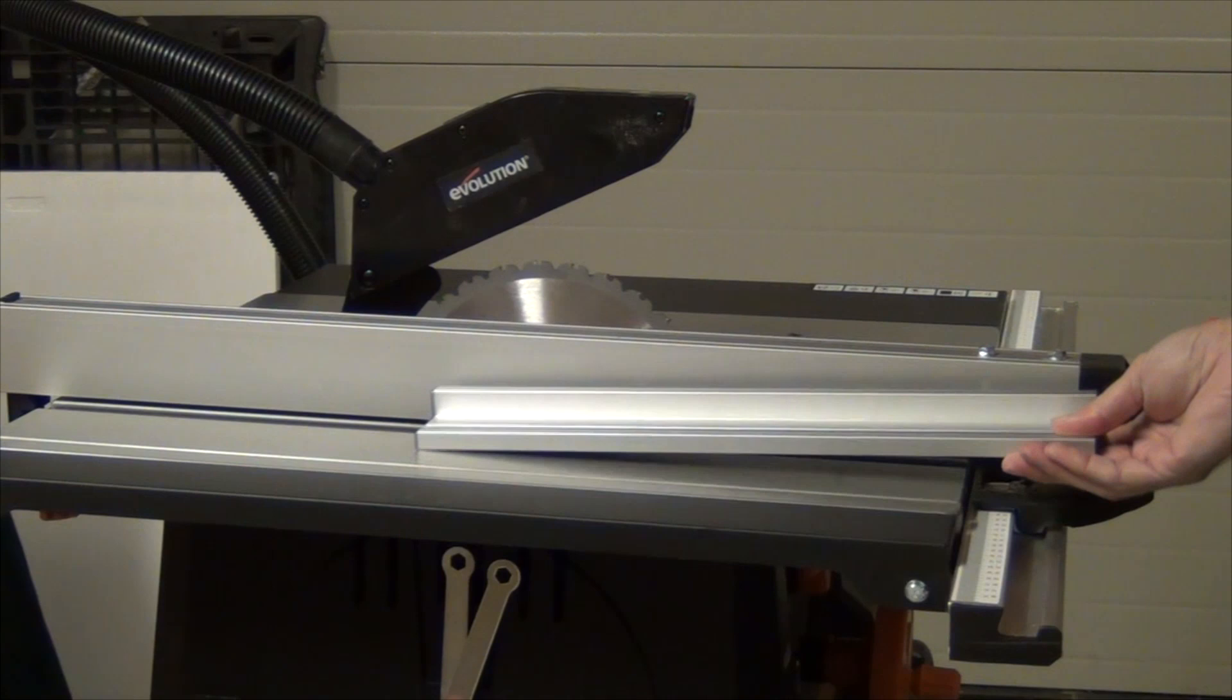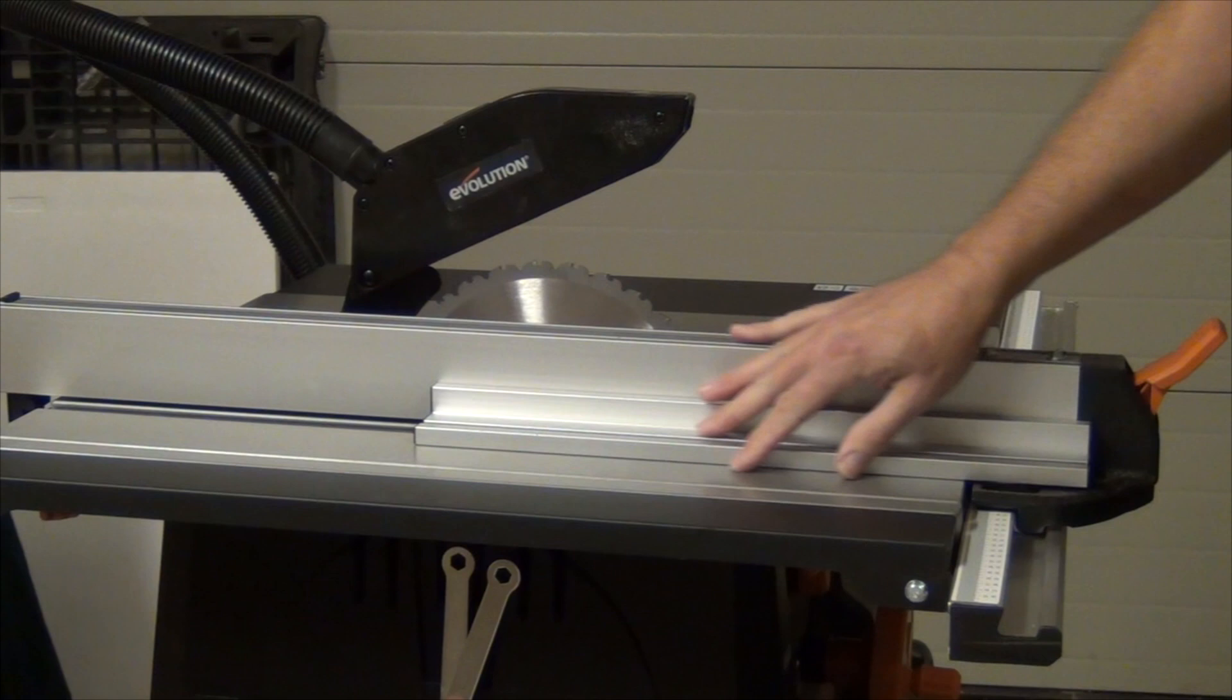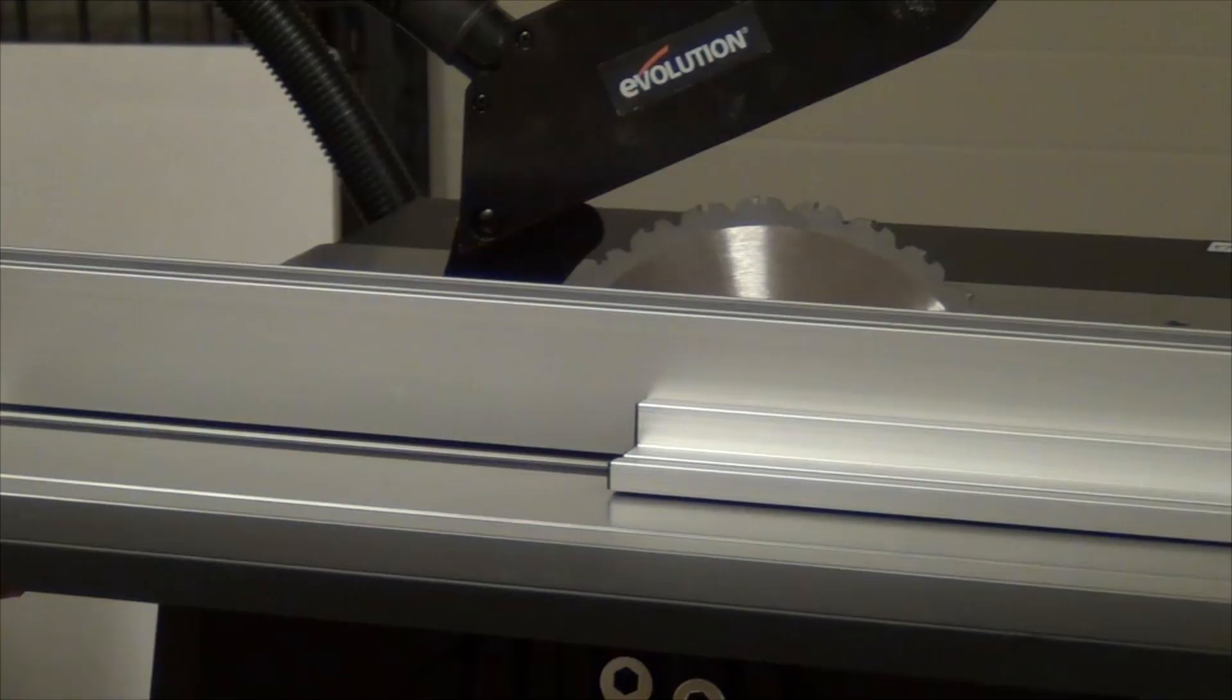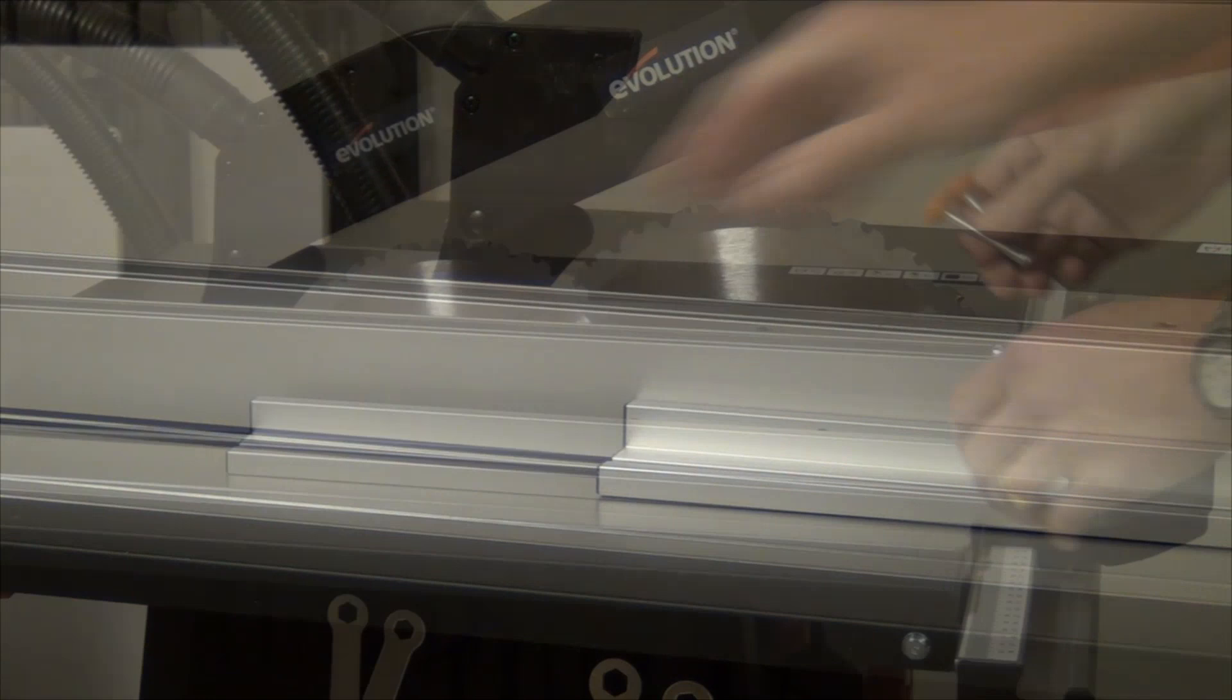The demountable sub fence can be really handy when you're working with very thin pieces. You can hold onto them close up like so, rather than stretching down over the full height of the fence.